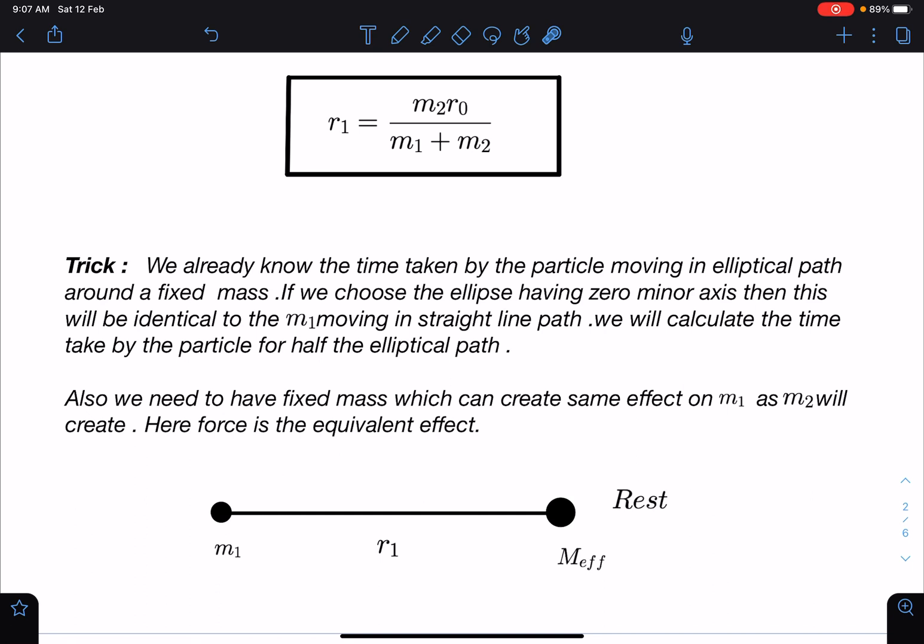So similarly here you can see between these two masses if I treat it as an elliptical motion - by the way here we have to use m effective concept here, I will explain. Let me read this part first. So here if we choose the ellipse having zero minor axis, then this will be identical to m1 moving in straight line path.